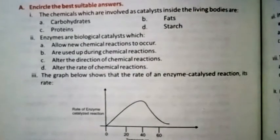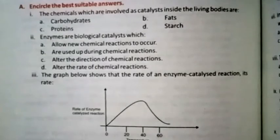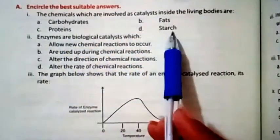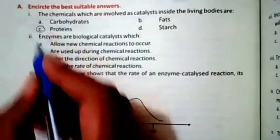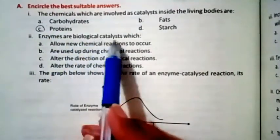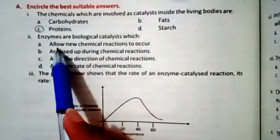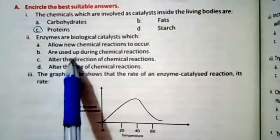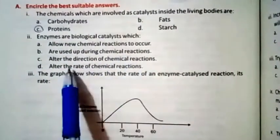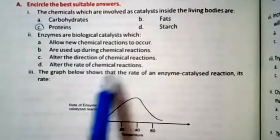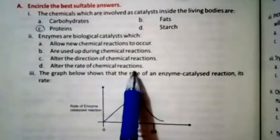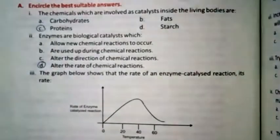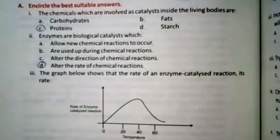Now we come to unit number six MCQs. Question one: The chemicals involved as catalysts inside living bodies are carbohydrates, fat, protein, or starch. The right option is protein. Question two: Enzymes are biological catalysts which alter the rate of chemical reaction. The right option is D — alter the rate of chemical reaction.